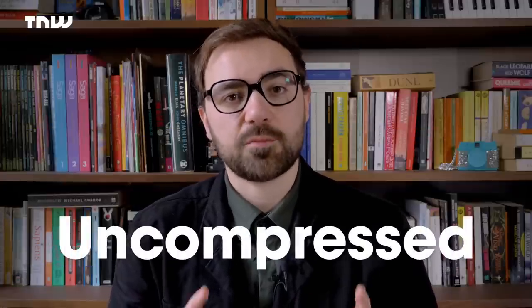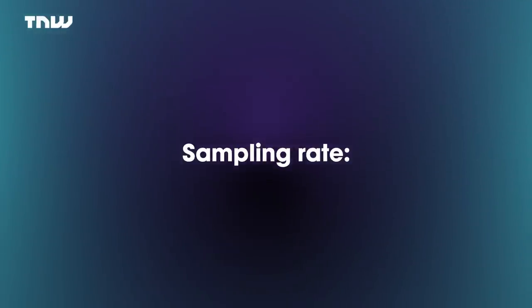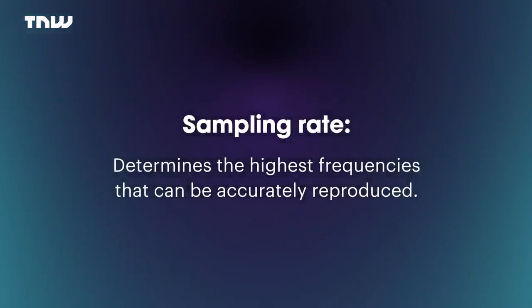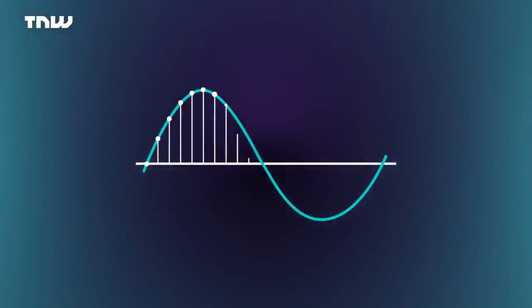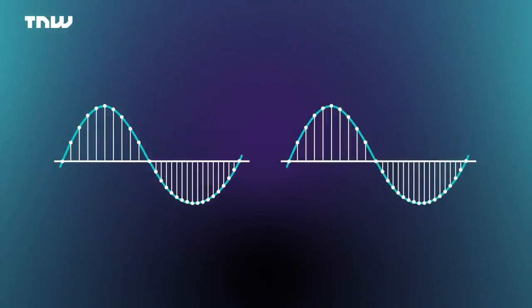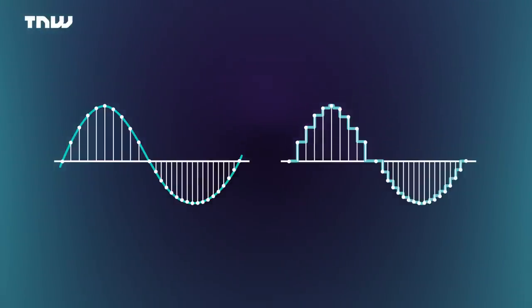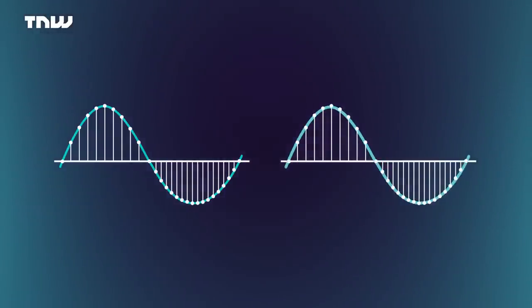Sampling rate and bit depth are only used for uncompressed music files — more on that later. The simplest way of putting it is: sampling rate determines the highest frequencies that can be accurately reproduced. Think of a smooth sound wave — the sampling rate is the number of points that try to emulate it as accurately as possible. Some graphs show a jagged sound wave, but in practice this never actually happens, because the wave is smoothed when the digital file is converted to analogue sound.